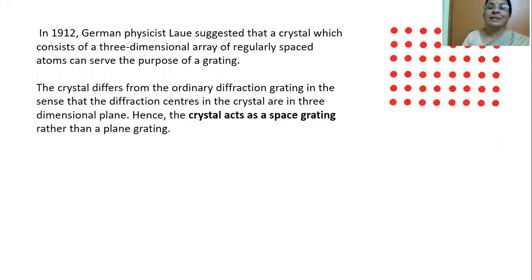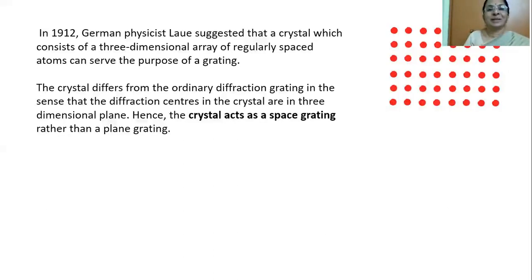In the lab, you would have seen grating. It's a two-dimensional object, whereas if you use this crystal, for example, a sodium chloride crystal or zinc sulfide crystal, a piece, it's a three-dimensional object. So, the atoms are arranged in three dimensions. So, you can see that the crystal could be a space grating. Now, Laue, with the help of a simple experiment, demonstrated that X-rays could be diffracted using simple crystal like sodium chloride or zinc sulfide.